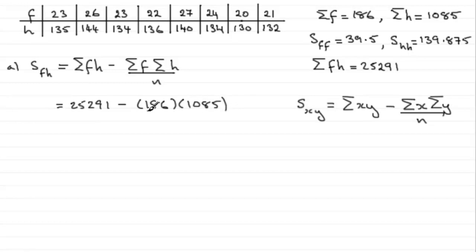And that's divided by the number in the sample, which is the number of columns we've got here, which is 8. If you work this out, you'll find you get exactly 64.75. So there's S of fh for you.